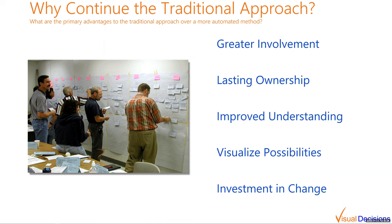There's also lasting ownership — if someone participates to that extent, doing all that work and effort, they'll have more lasting ownership of the result. Along with that comes an improved understanding of the process itself. If the whole value stream map is generated automatically and everyone just looks at it on a projected screen, you may not get the same level of understanding as if they're out on the floor collecting data by hand, walking the process, talking to the people involved in it day-to-day.